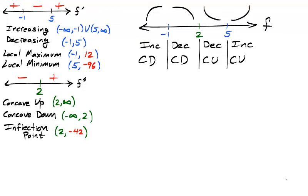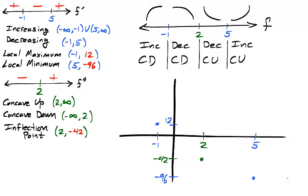Before we sketch the function, we now know roughly how each interval should appear. We complete our sketch by graphing the local extreme points and the inflection point. We note the function's end behavior. As x approaches negative infinity, y approaches negative infinity. And as x approaches positive infinity, y approaches positive infinity.